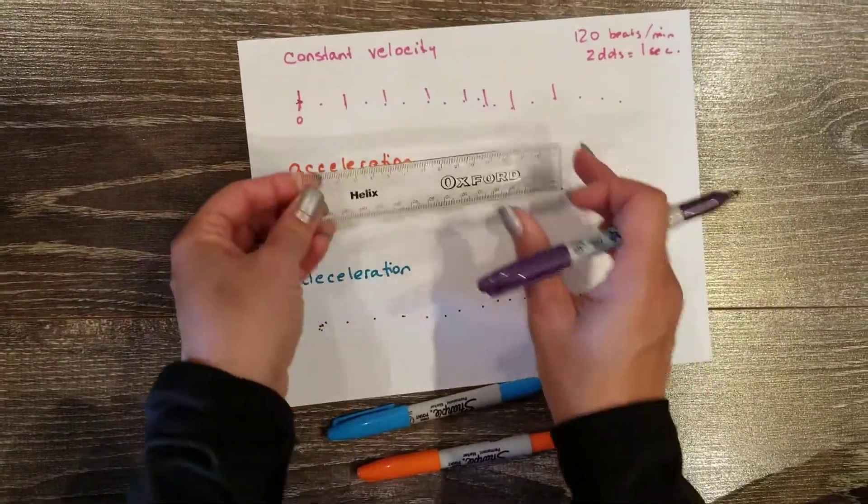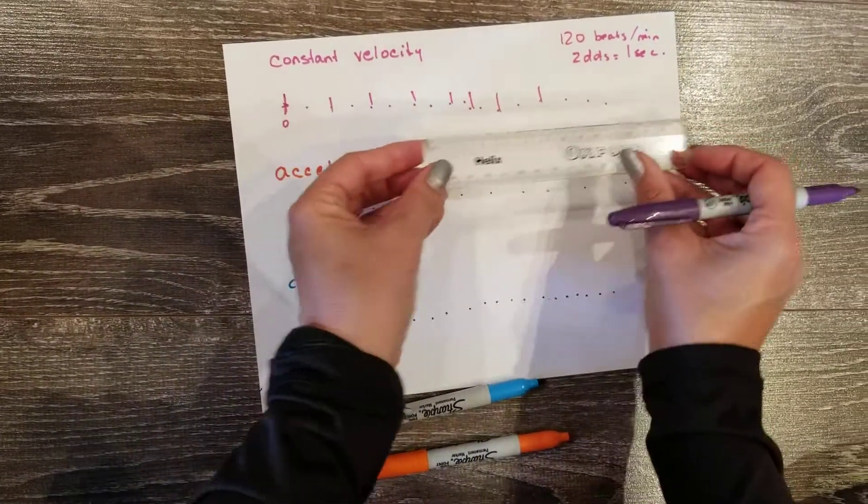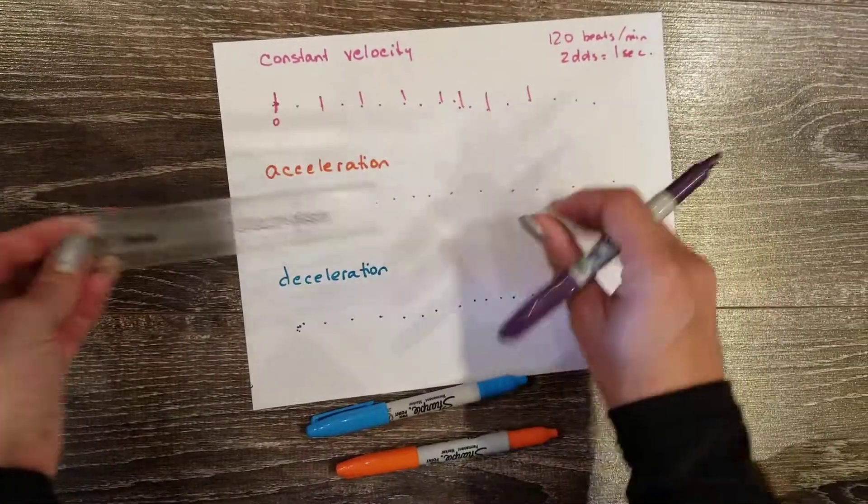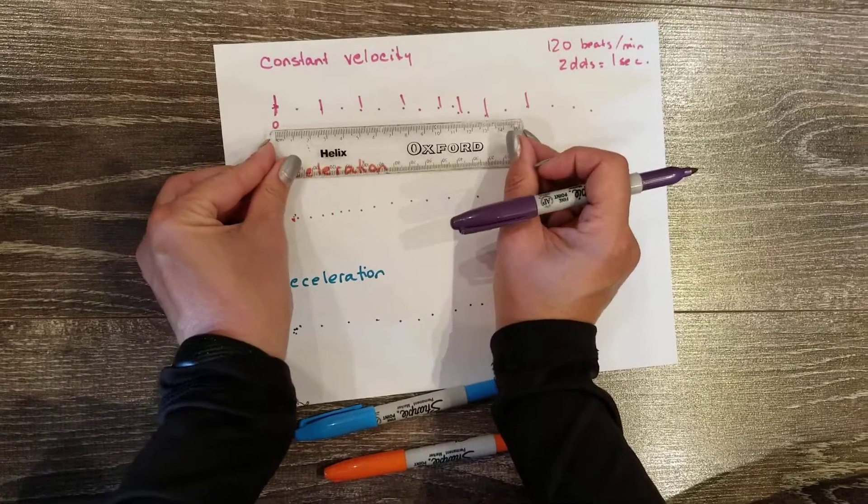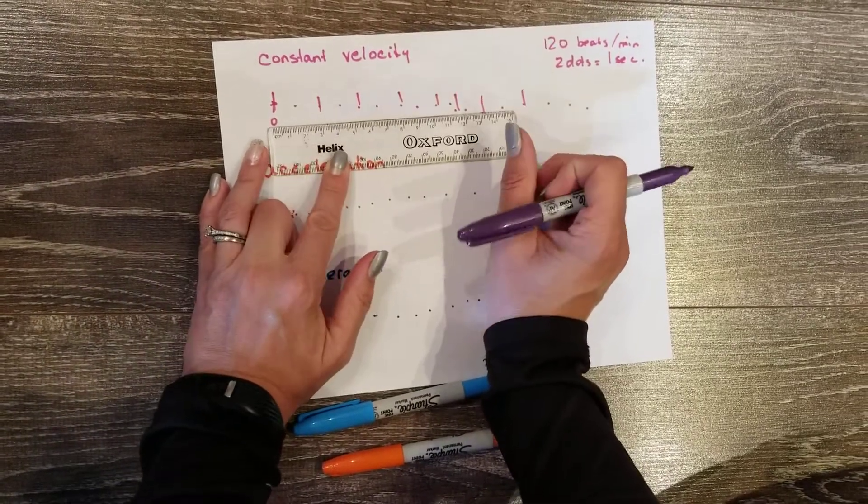And we're going to measure the distance from time zero to each line. Now I'm not interested in measuring in between each line, although we will look at that afterwards. I want us to measure always from time zero to each line.